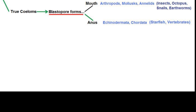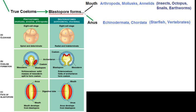Examples of protostomes are arthropods, mollusks, and annelids — basically insects, octopi, snails, earthworms, etc. If the blastopore becomes the anus, it develops first, and the organism is called a deuterostome. Examples of this are Echinodermata and Chordata — which are us, and starfish and things of that nature.